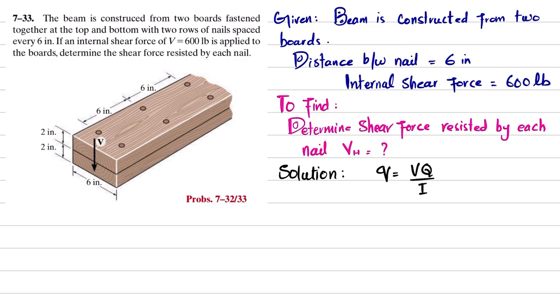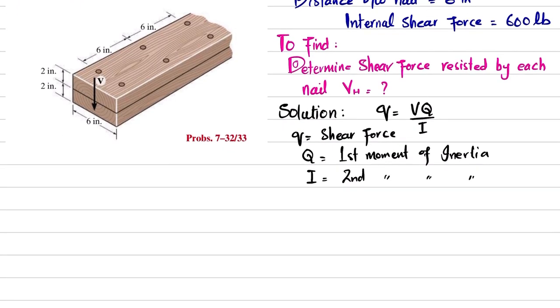Where small q is shear flow, which is horizontal shear force per unit length. Q is the first moment of inertia, and I is the second moment of inertia. So we will find this term first, and then we will find the horizontal shear force.